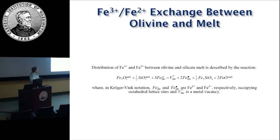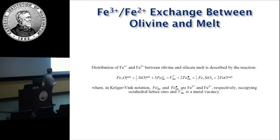Now consider ferric over ferrous iron exchange between olivine and melt. The distribution of ferric and ferrous iron between olivine and silicate melt is described by a reaction in Kröger-Vink notation: Fe2O3 in the melt plus one-half SiO2 in the melt react with three ferrous irons sitting on a metal site to form a metal vacancy, two ferric irons on a metal site, half a fayalite molecule, and some divalent iron dumped into the melt. We're taking some oxygen from the melt, putting it into the olivine as a metal vacancy, charge-balancing it with ferric irons, and slightly reducing the melt.